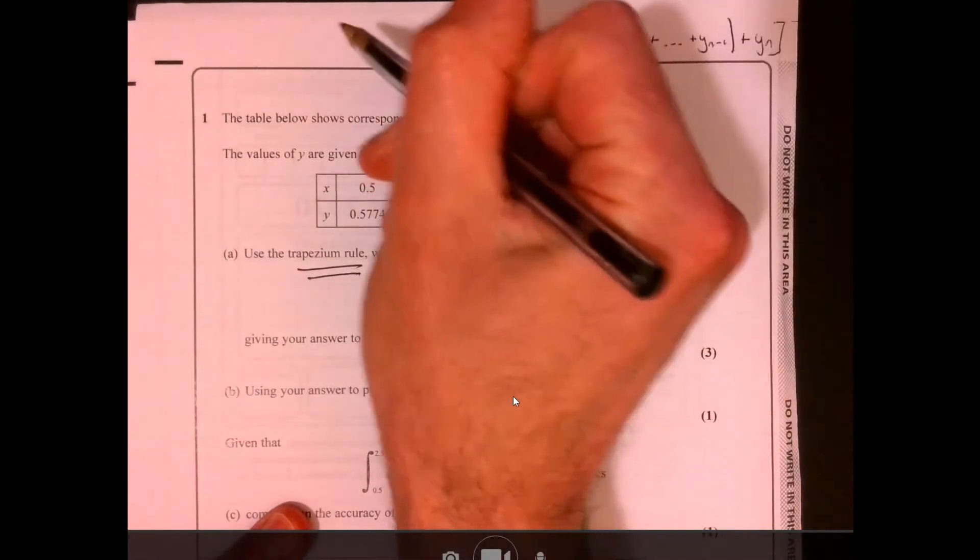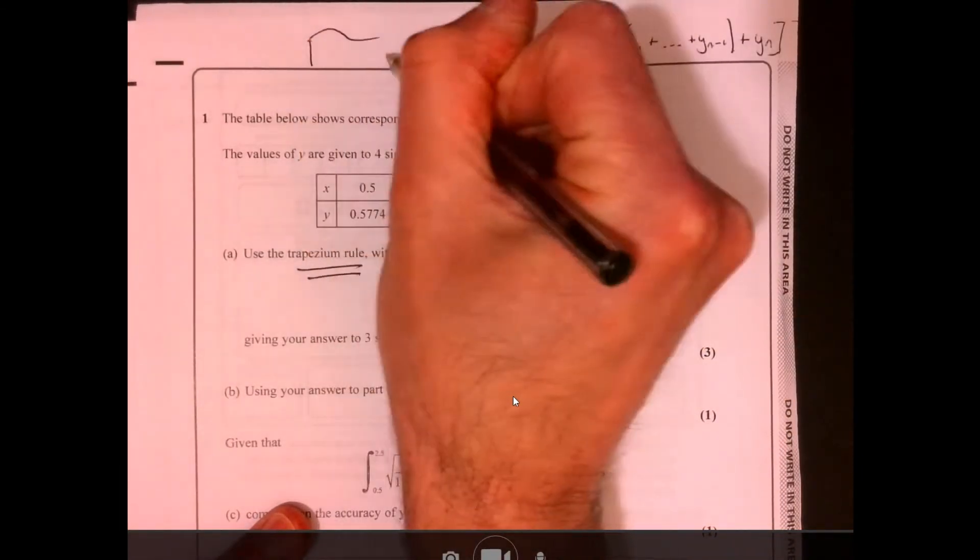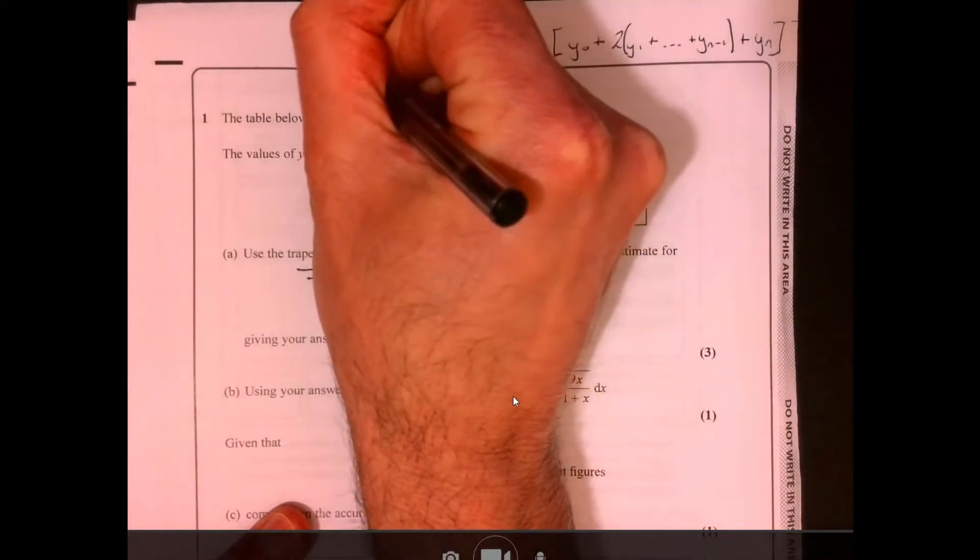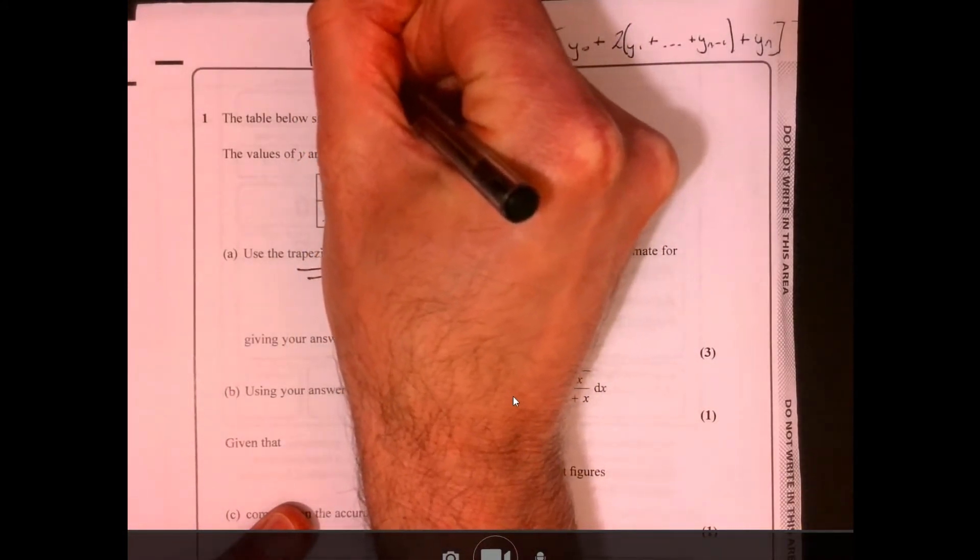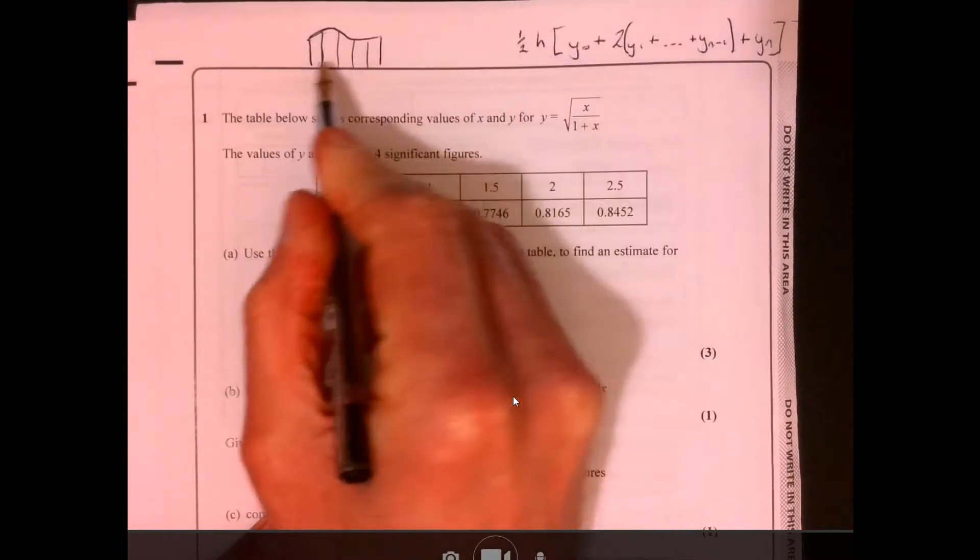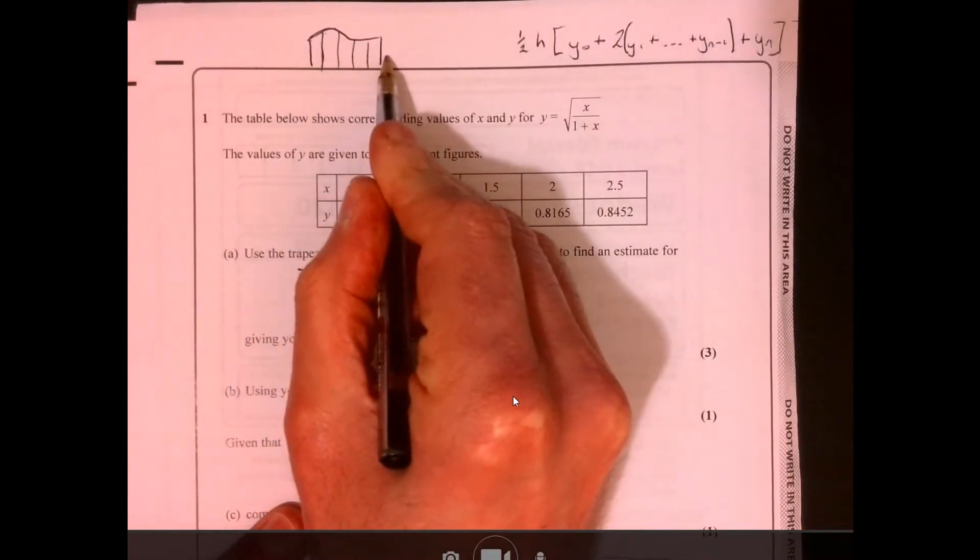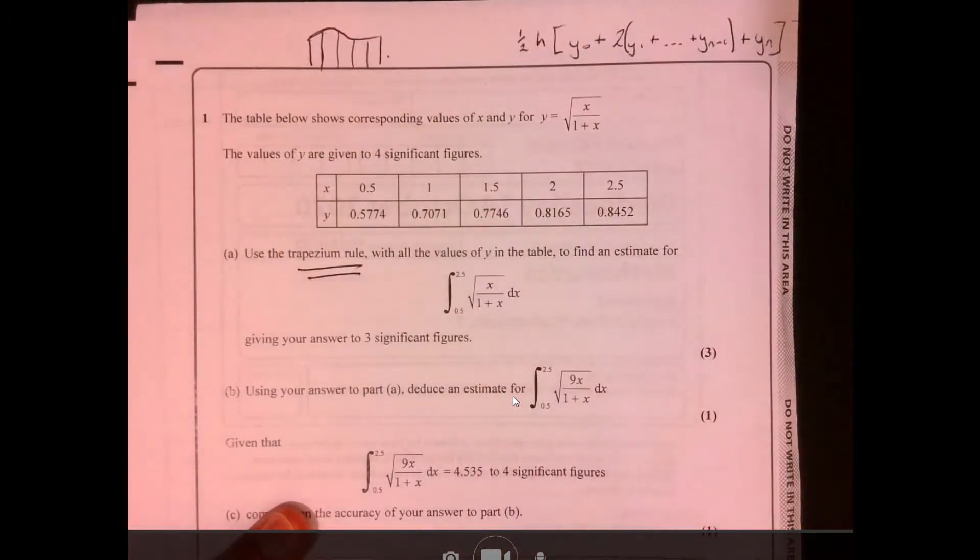It's just putting these numbers in here. Remember all trapezium rule is, is if you've got some curve and you're trying to work out the area under it, then all you're doing is you're just estimating effectively with trapeziums. The smaller these strips are, then the better your approximation is going to be.